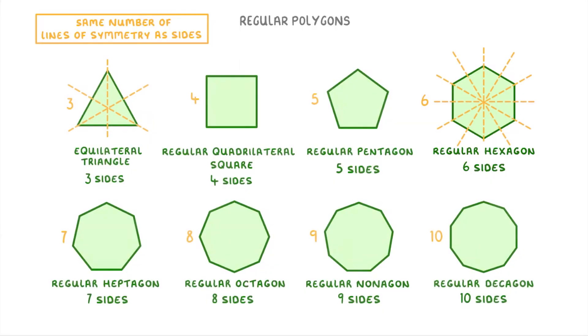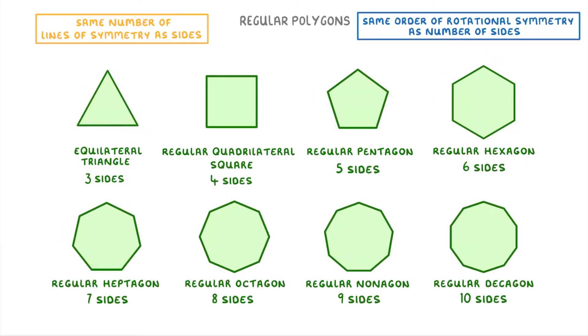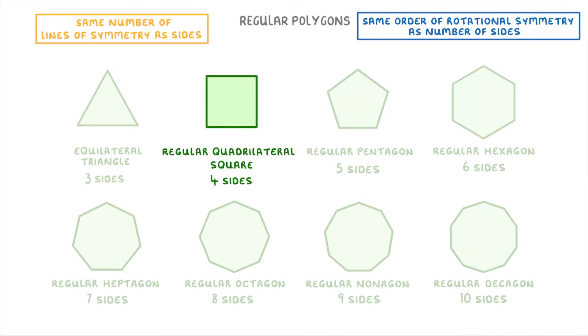And the same rule goes for all the others. They also have the same order of rotational symmetry as they have number of sides. So a square, which has four sides, will have a rotational symmetry of order four, which just means that with one complete rotation of 360 degrees there are four positions where the square will look the same. For example, if we mark this top side so you can follow it around as it rotates, the square will look the same here, here, here, and back here at the start.